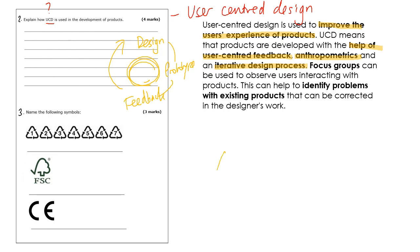Focus groups can be used to observe users interacting with products, helping to identify problems with existing products that can then be corrected in the designer's work. It's basically about getting lots of feedback from customers, having them interact with the product, using an iterative design process, and bringing in anthropometrics — at all times considering the user.